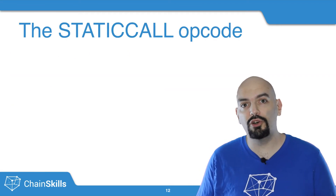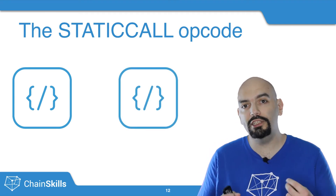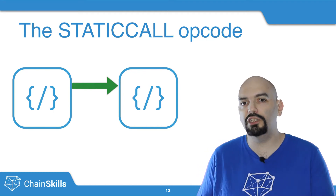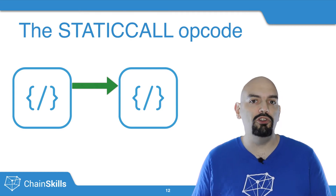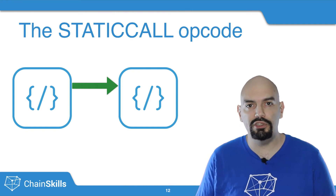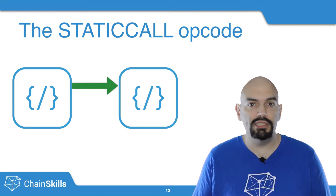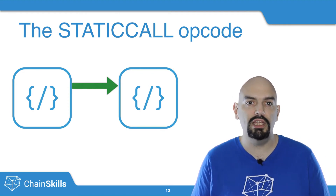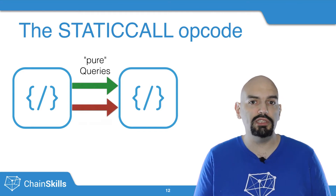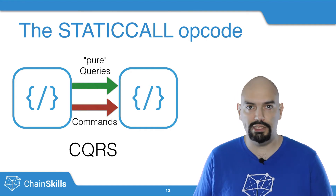The fourth opcode added to the EVM is called Static Call. It will make it possible for one contract to call another contract with the explicit requirement that the called contract cannot modify the blockchain state. This is very important because when you call another contract from your own, you might not know exactly what it does, and it might modify your contract's state by calling back a function on it, which could cause a re-entrancy bug. This kind of re-entrancy bug is very famous on Ethereum — the hack on the DAO contract was caused by exactly such a bug. So Static Call enables calls that are guaranteed not to modify the blockchain state, enabling the Command Query Responsibility Segregation pattern, or CQRS, on the Ethereum blockchain.